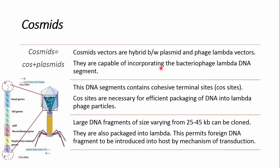If we look at the genome of the bacteriophage, you can see it is composed of DNA with several genes, and the ends of the genome have cos sites. These cos sites are necessary for efficient packaging of DNA into the lambda phage particle. These cos sites also have another function: when the phage particle infects the bacteria, these cohesive ends ensure that the DNA circularizes properly inside the bacteria.